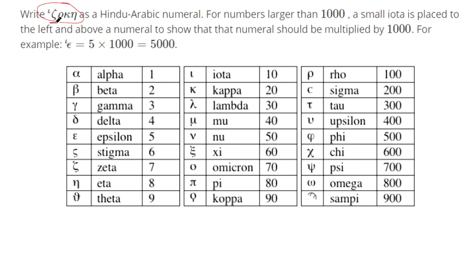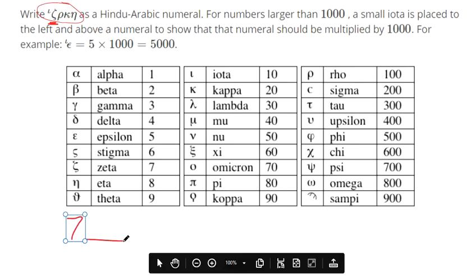This first symbol here is zeta, which means it's a 7 in the 1,000s place because of the iota. And now the next symbol, we have a rho that's in the 1,000s place, so we'll put a 1 here for the 1,000s place.